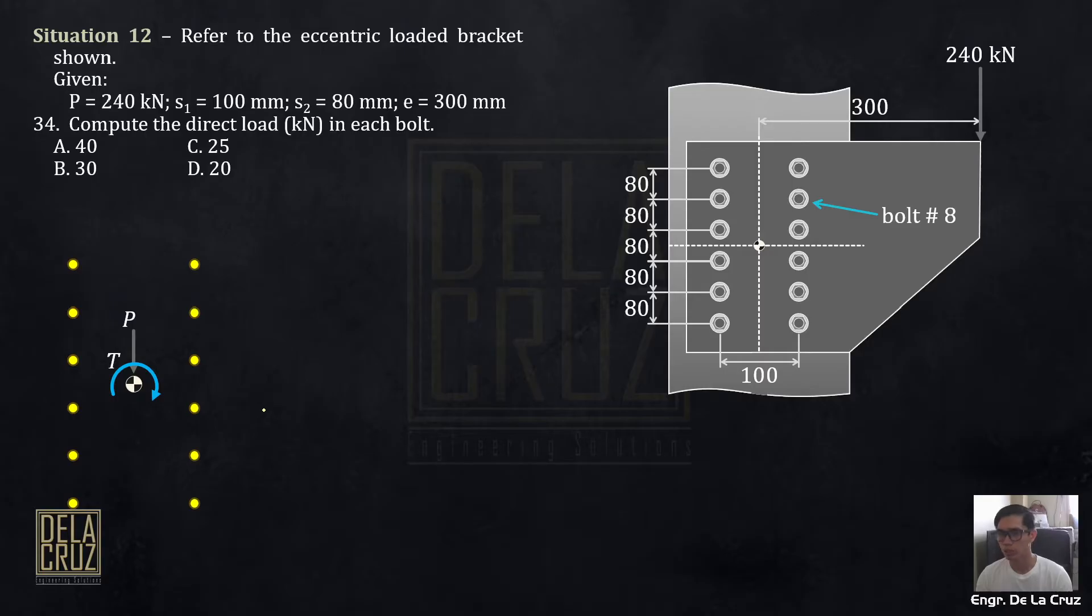If we transfer it, we'll have twisting or torsion. That's the torsion or the torque. That is simply, the torque is the moment at that point. So, P times 300 millimeter. Direct load that is caused by that load P. So, because of that load P, all of them will share it. That's what we call the direct load.